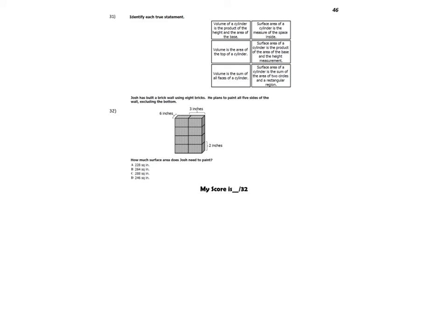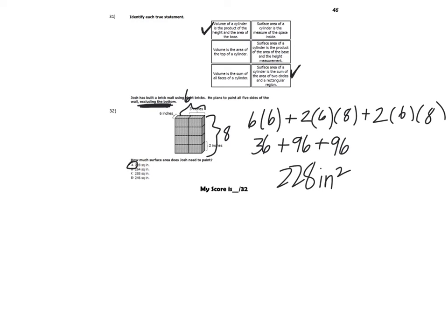So last page that we'll do together. So on page 46, try numbers 31 and 32, and then check yourself with me. All right, so check yourself, make sure that everything's right. So 31, the volume of a cylinder is the product of the height and the area of the base. Could you do pi r squared times the height? Surface area of a cylinder is the sum of the area of the two circles and the rectangular region. And then finally 32. Be careful with this one because he plans to paint all sides except for the bottom part. So I just did 6 times 6 to get 36 for that. Then I followed my formula, so 2 times everything else, and I got 228 square inches.